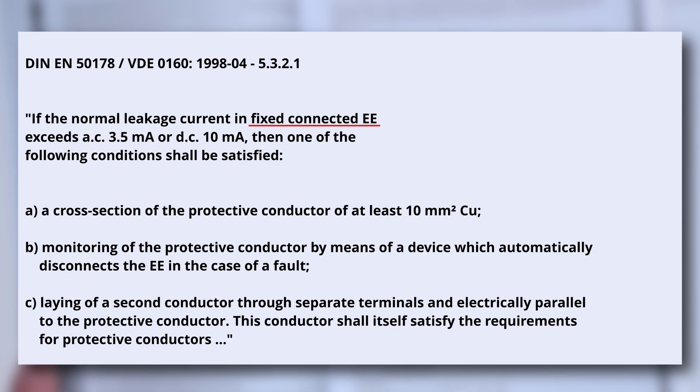B: monitoring of the protective conductor by means of a device which automatically disconnects the EE in case of a fault. C: laying of a second conductor through separate terminals and electrically parallel to the protective conductor. This conductor shall itself satisfy the requirements for protective conductors.